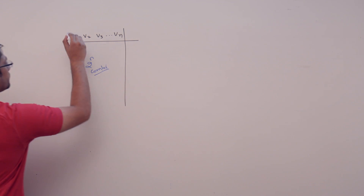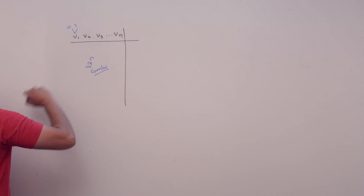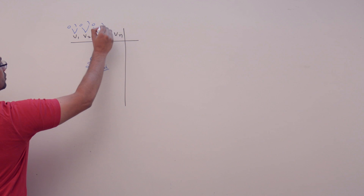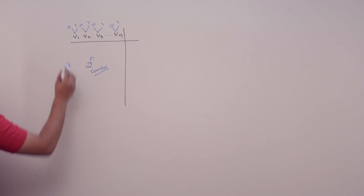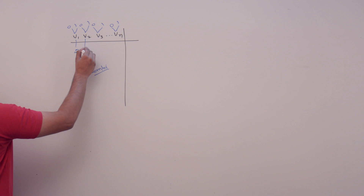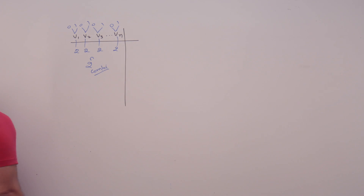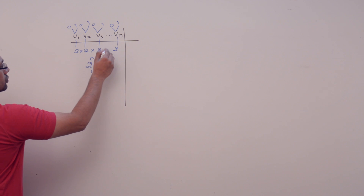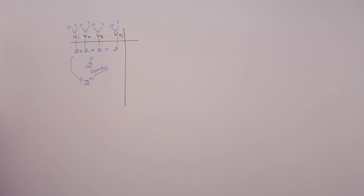Why? Because each variable can assume two values: either 0 or 1. For every variable we have two choices, so the total number of choices is 2 × 2 × 2 × 2, which equals 2 raised to power n choices — or 2 raised to power n different combinations.